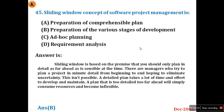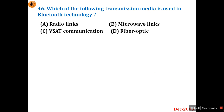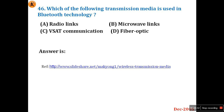Question 46: Which transmission media is used for Bluetooth technology — radio links, microwave links, V-SAT communication, or fiber optic? Fiber optic is wired, so we can eliminate that. Bluetooth is a short-range wireless communication technology that works using radio links. Answer is A.